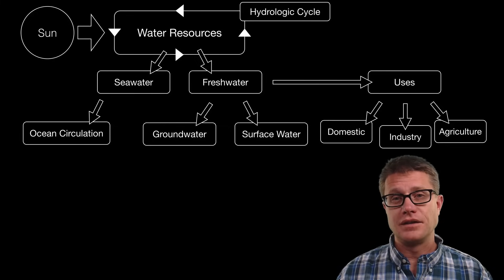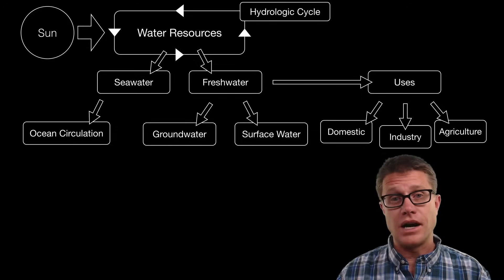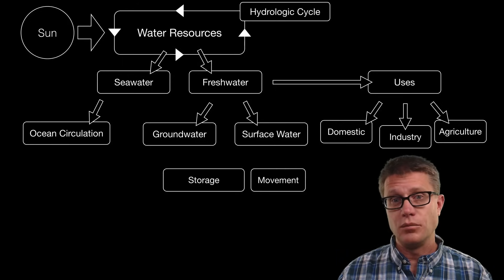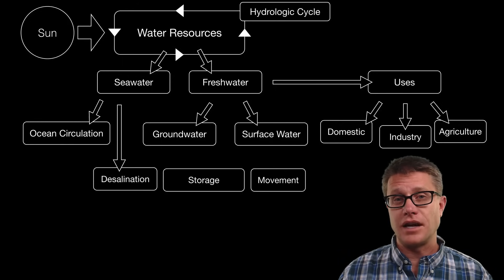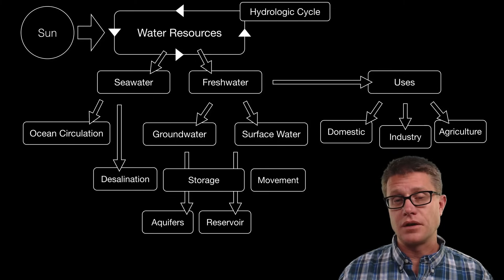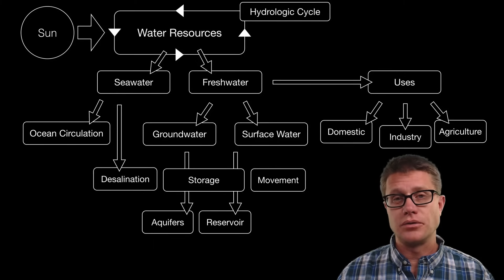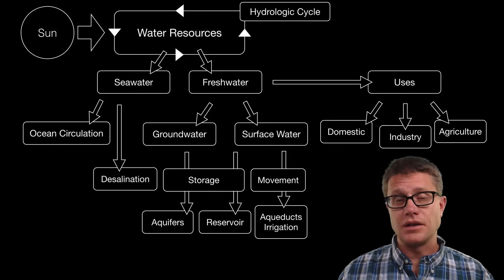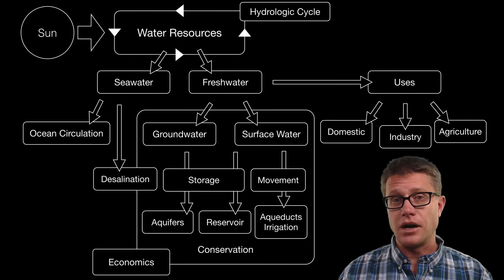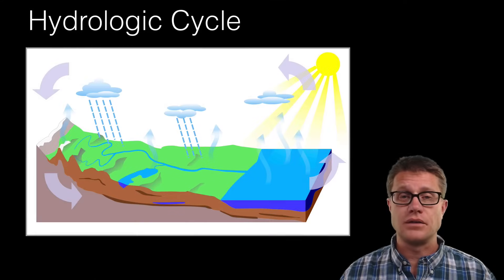The problem with water on our planet is that it is unevenly distributed. In some areas there is lots of water; in some areas there is going to be scarcity. So humans have had to learn how to store water, move it around, and in the future we may have to desalinate some of that sea water to use it as fresh water. Ground water is stored in aquifers that we can deplete. Surface water can be stored in reservoirs that occur naturally or ones created by dams, and then we can move it around through aqueducts and irrigation. But we have a finite amount, so conservation is incredibly important, and economics have contributed to water loss and could help us solve this water conservation problem.